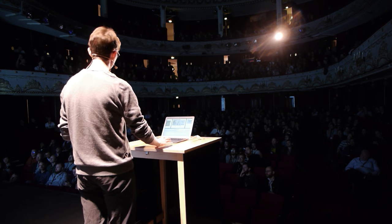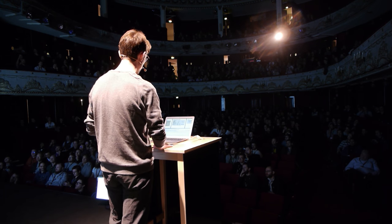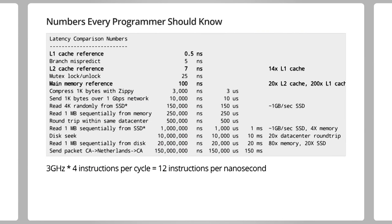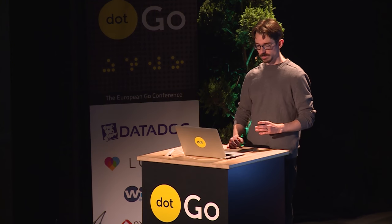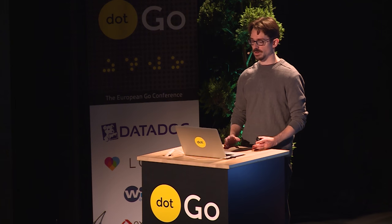Let's do some quick calculations. If you have a 3-gigahertz processor, that means there are three cycles every nanosecond. If your processor can complete four instructions per cycle — which is not unreasonable — then in the 100 nanoseconds it takes to fetch a cache line from main memory, you've just stalled for 1,200 instructions. You can do a lot in 1,200 instructions.